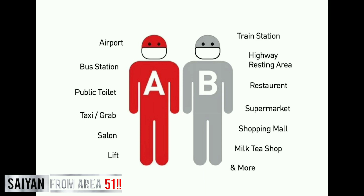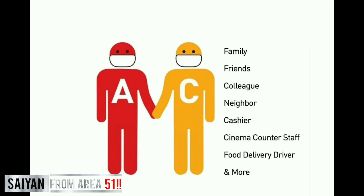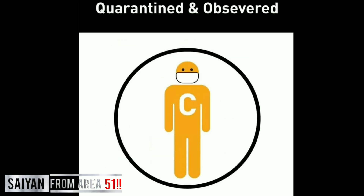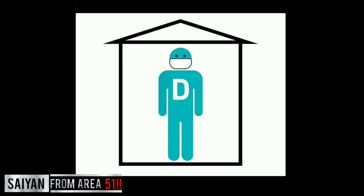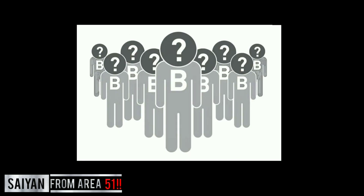Group A finally arrives and meets C. No matter how many C there are, we can always find them. C is quarantined and observed. B stays home and never goes out, but the real problem is we can't find B — nobody knows who B is, including B themselves. They don't even know if they are affected or not.